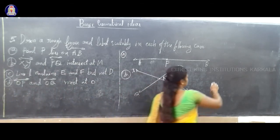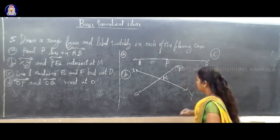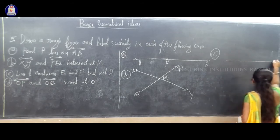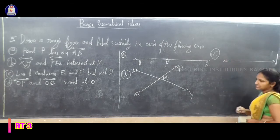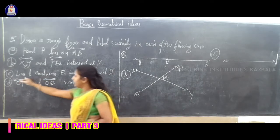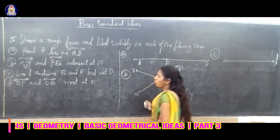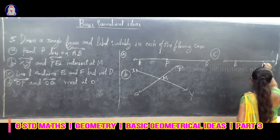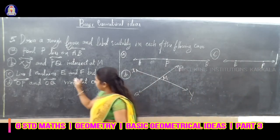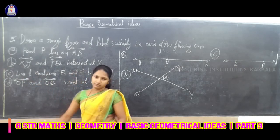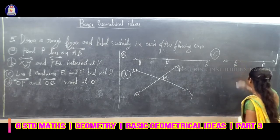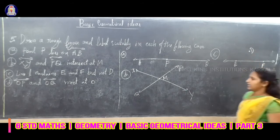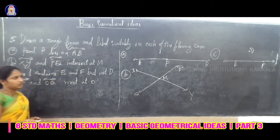How can we represent this? Draw a horizontal line — this is line L. Line L contains points E and Y. D is not on line L. Only E and Y are on the line.